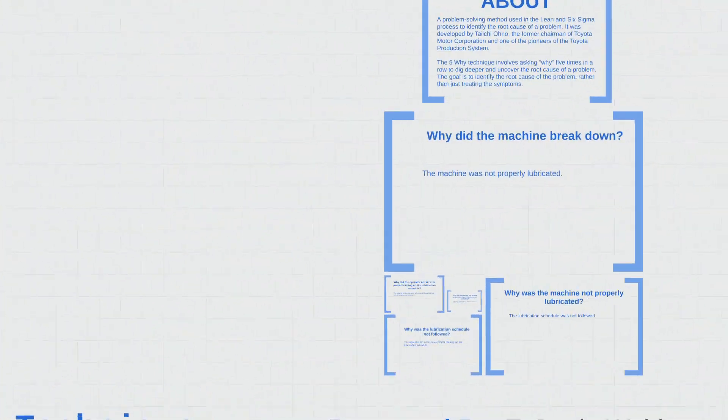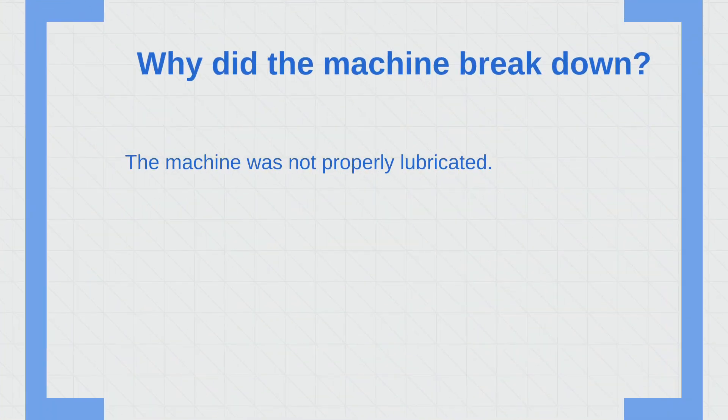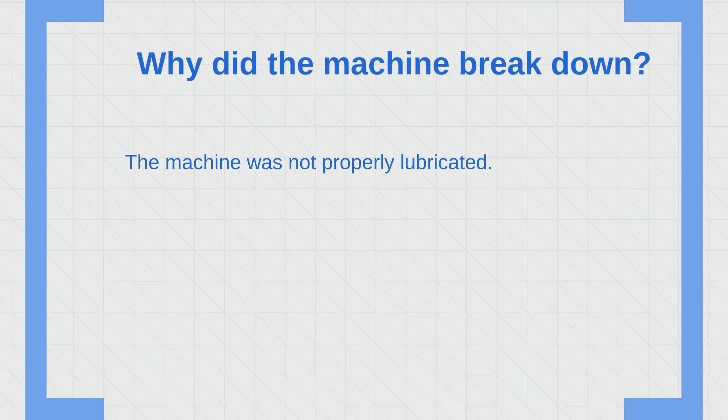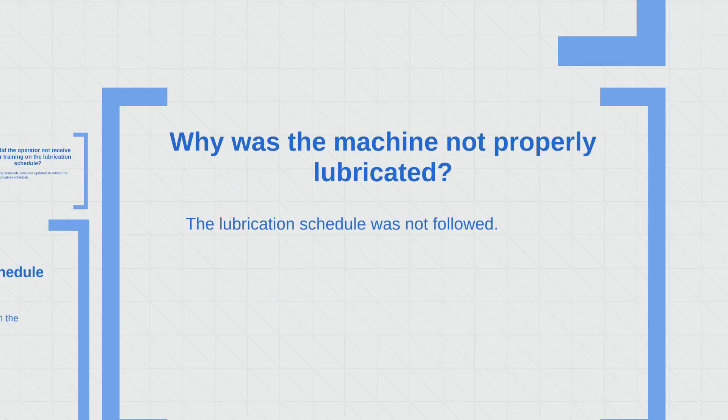Here's an example. Why did the machine break down? The machine was not properly lubricated. Why was the machine not properly lubricated? The lubrication schedule was not followed.